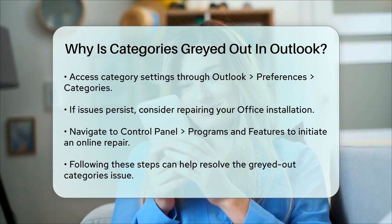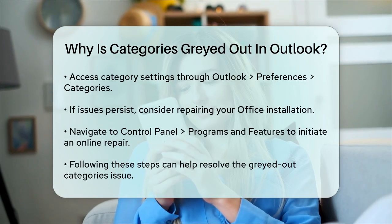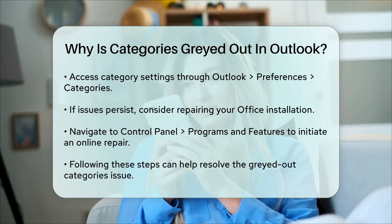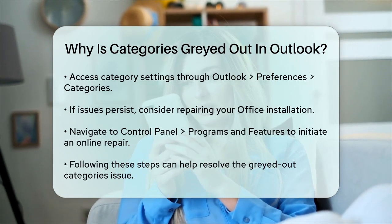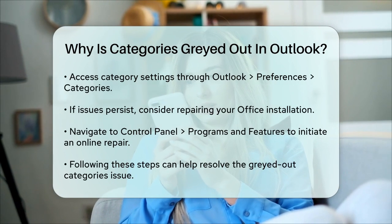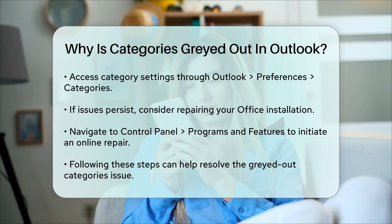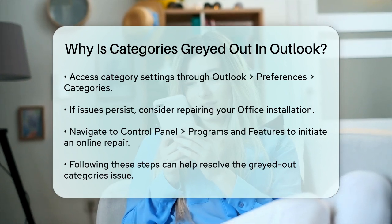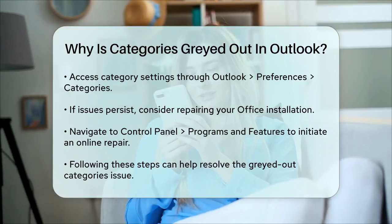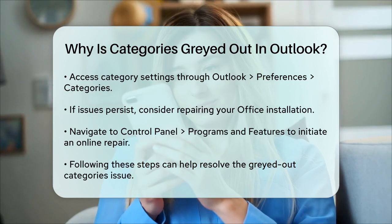If none of these steps work, you might want to try repairing your Office installation. Go to the Control Panel, select Programs and Features, right-click on your Office product, and then select Change, then Online Repair. This can help resolve any underlying issues with your Outlook application.